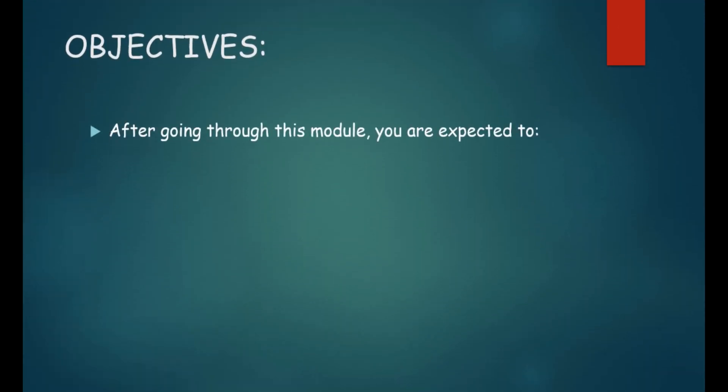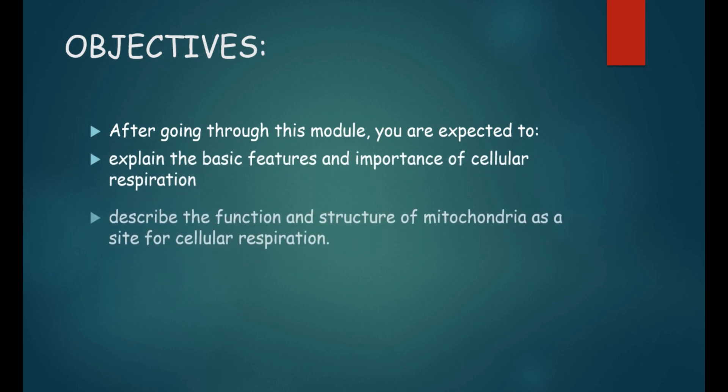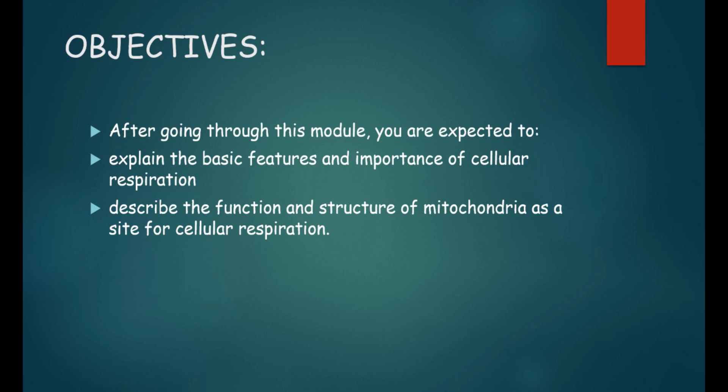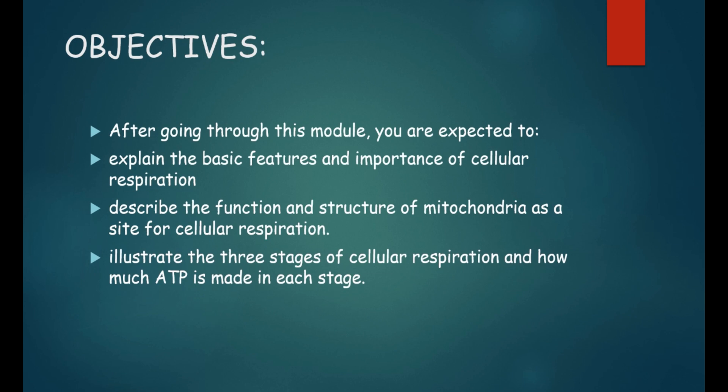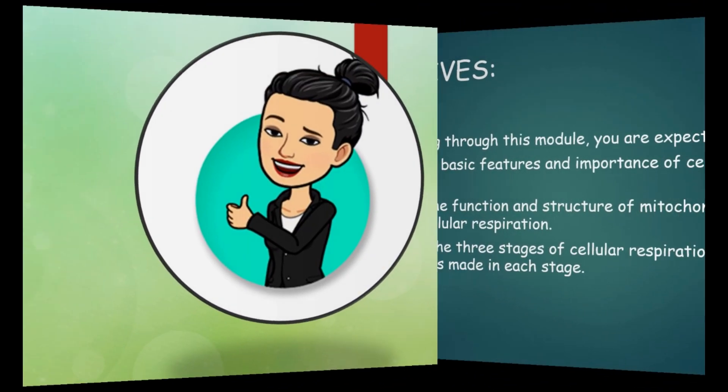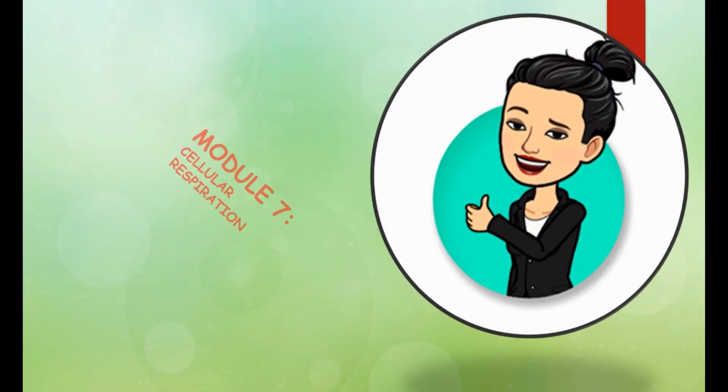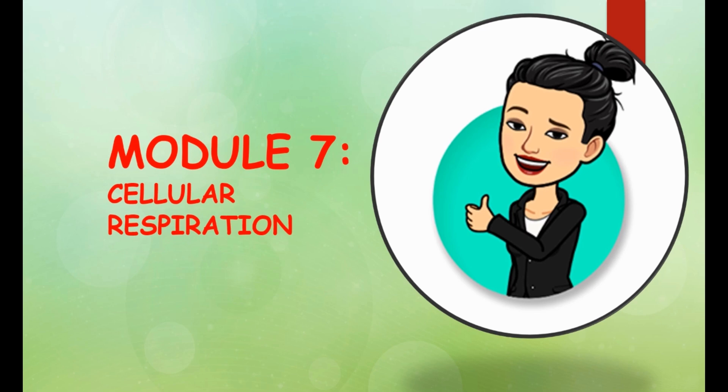After going through the module you're expected to explain the basic features and importance of cellular respiration, describe the function and structure of mitochondria as a site for cellular respiration, and illustrate the three stages of cellular respiration and how much ATP is made in each stage. And so with that, let's talk about module 7, cellular respiration.